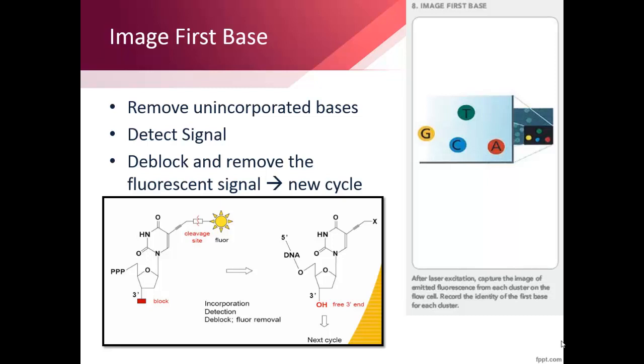The unincorporated bases, which are the bases that were not attached by a polymerase to one of the newly forming sequences in the clusters, are washed away. Then the machine can clearly detect the fluorescent signals that are left and record the base that was added to each of the clusters.